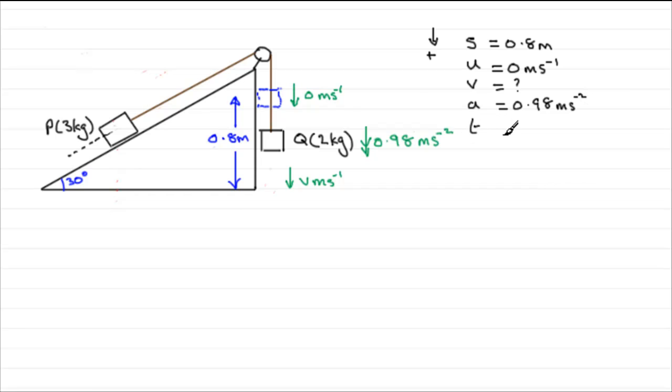As for T, well, we don't want to know T, so we can just leave that out. So I'll just rub that one out. So what equation links SUV and A? Well, hopefully you've remembered that it is V squared equals U squared plus 2AS. So that's what we're going to be using.